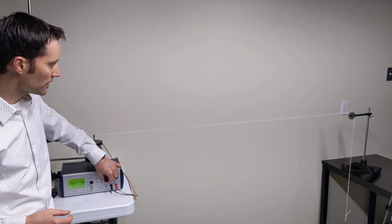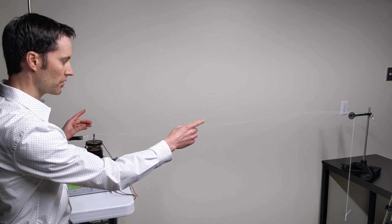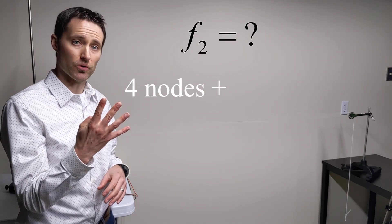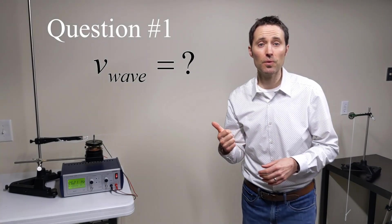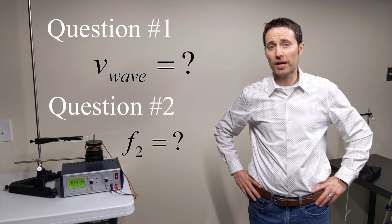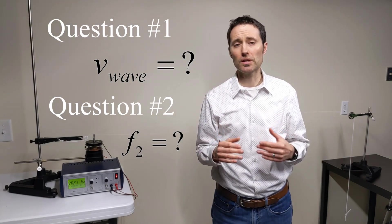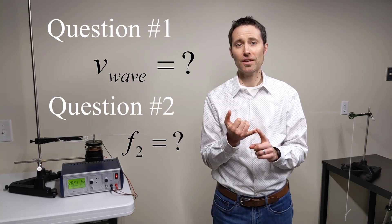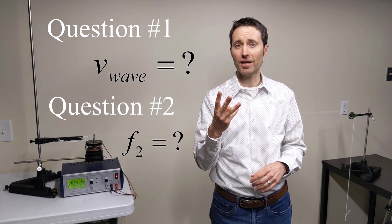Question number two: what would be the next possible frequency to create a standing wave? We know 26.21 hertz creates a standing wave with three nodes and two antinodes. What frequency would create exactly four nodes and three antinodes? Go fill out your lab challenge sheet — write down the measurements from the video, draw diagrams of the standing wave we saw and the one we want to create, and solve for the wave speed V and the next possible frequency for four nodes and three antinodes.